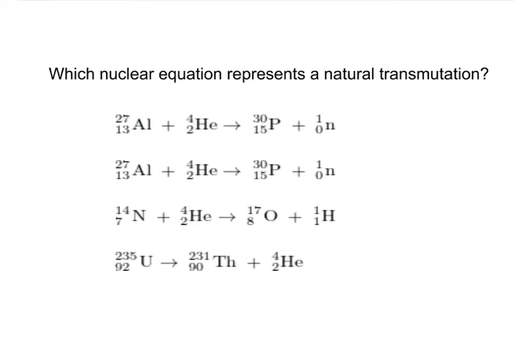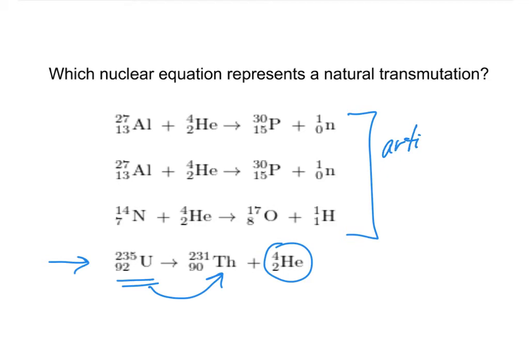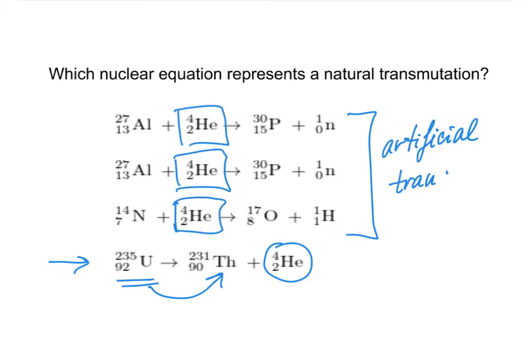Next question: which nuclear equation represents natural transmutation? Natural transmutation occurs spontaneously without us doing anything. The answer is the reaction where uranium, being unstable, transmutes into thorium with an alpha particle released. In all other reactions we are clearly shooting alpha particles into aluminum or nitrogen — there are two reactants on the left, which indicates artificial transmutation.